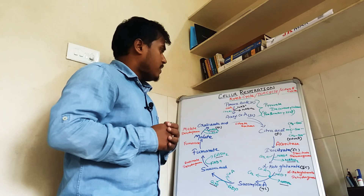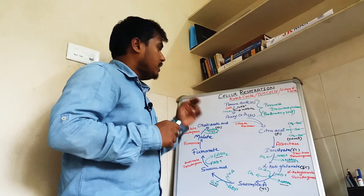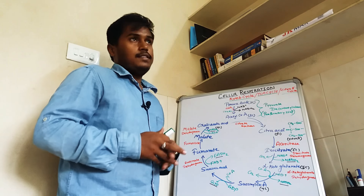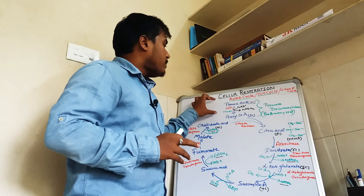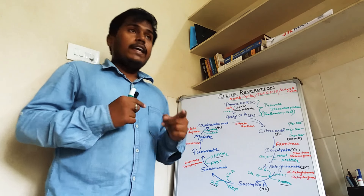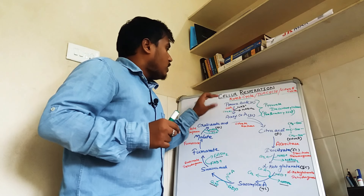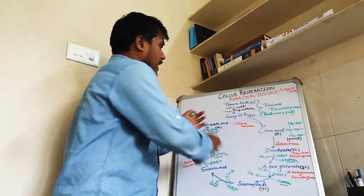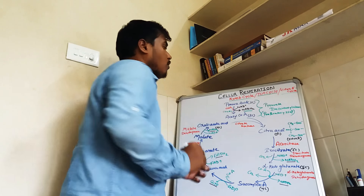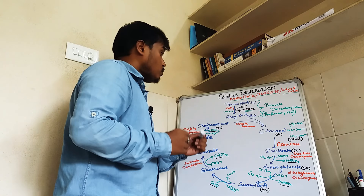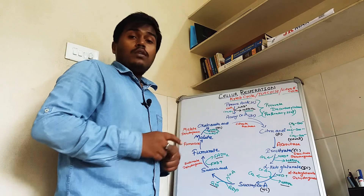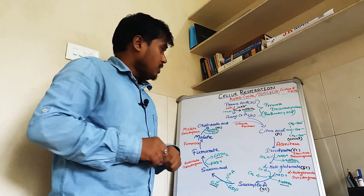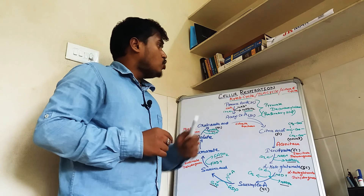One pyruvic acid will convert into acetyl CoA in the presence of CoA and enzymes, and CO2 will be released. That is why this process is called pyruvate decarboxylation. It is also called the preparatory step, and it is not included in the Krebs cycle itself. In this step, we get one molecule of NADH2.